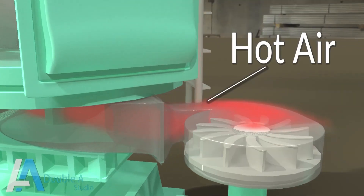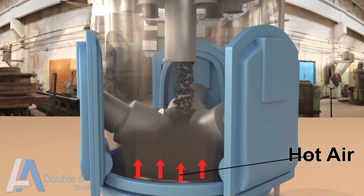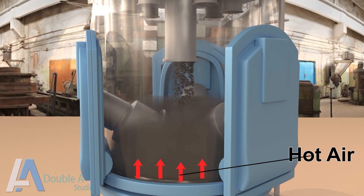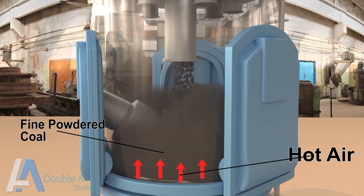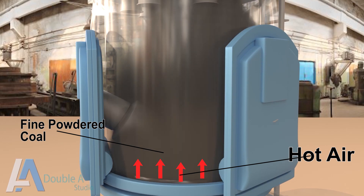To facilitate the flow of hot air, PA fans are installed at the bottom of the mill. They create positive pressure and throw hot air inside the mill. When hot air enters the mill with pressure, it carries fine powdered coal with it and sends it to the boiler. As a result, coarse coal falls back for pulverization and the process repeats.